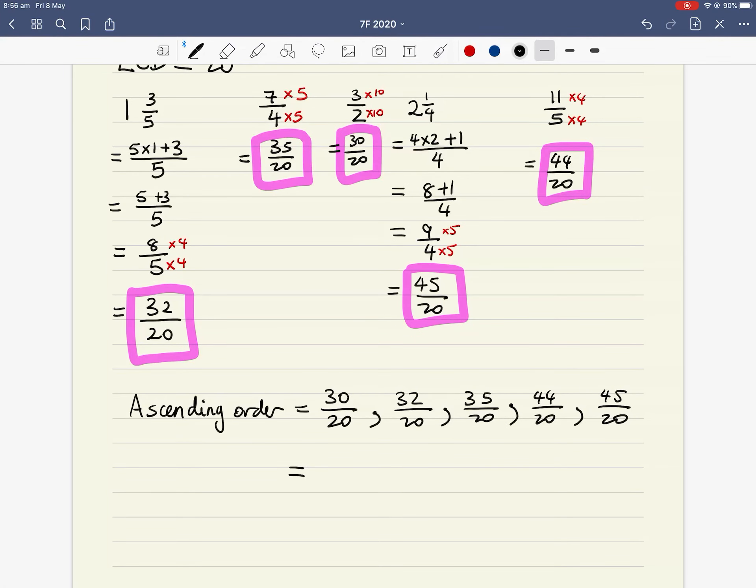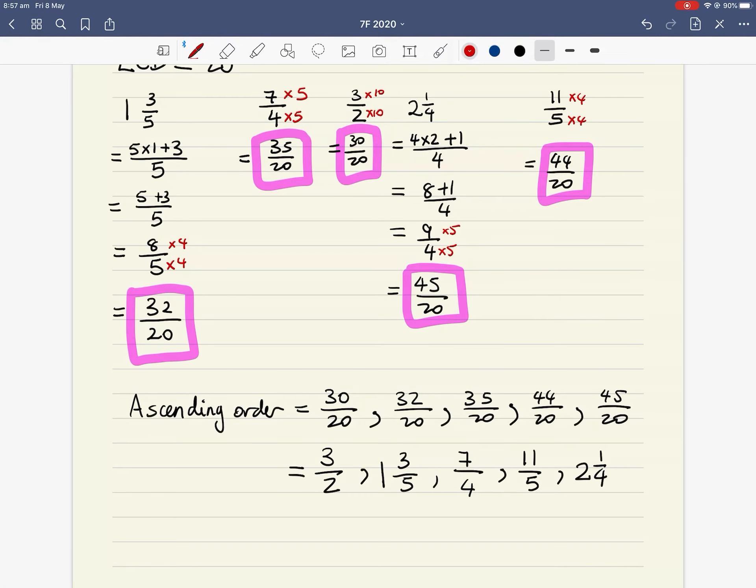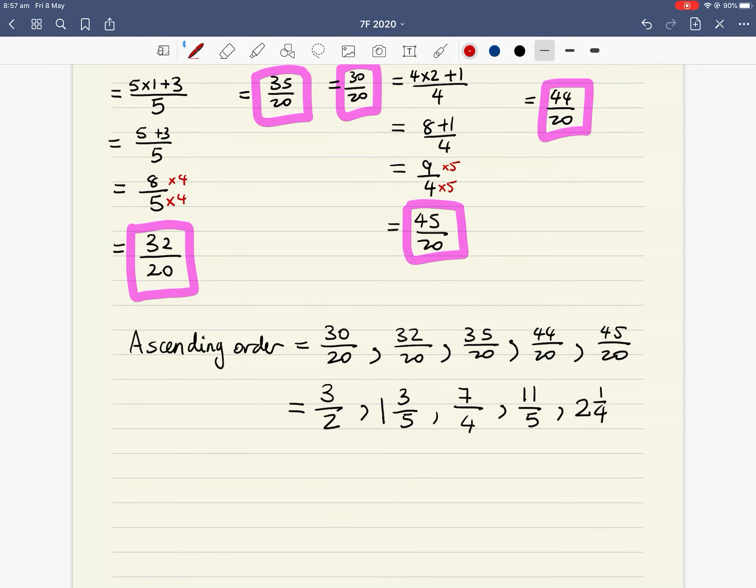30 over 20, well, which fraction was 30 over 20? 30 over 20 was the same as 3 over 2. What about 32 over 20? Well, that was 1 and 3 fifths. 35 over 20 was the same as 7 over 4. 44 over 20 was 11 over 5. And finally, 45 over 20 was 2 and a quarter. So our answer is the final line in ascending order: 3 over 2, and then comma, 1 and 3 fifths, and then comma, 7 over 4, comma, 11 over 5, and comma, 2 and a quarter. So make sure you always put your answer in original form. Otherwise, you will lose.